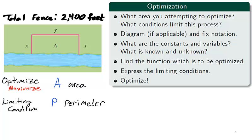However, you are only trying to fence three sides of the rectangle, as it is unnecessary to fence along the river. We label the rectangle with dimensions x and y. In our third step, we ask the question, what are the constants and variables, and what are the knowns and unknowns? The unknowns are the variables x, y, and A, while the perimeter is constant and known to be 2400 feet.